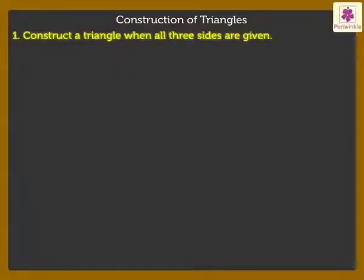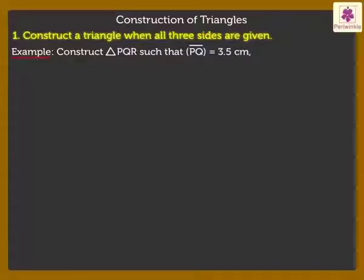Let's start with how to construct a triangle when all three sides are given. Construct Triangle PQR such that Segment PQ is equal to 3.5 cm, Segment QR is equal to 5.1 cm and Segment PR is equal to 4.3 cm.